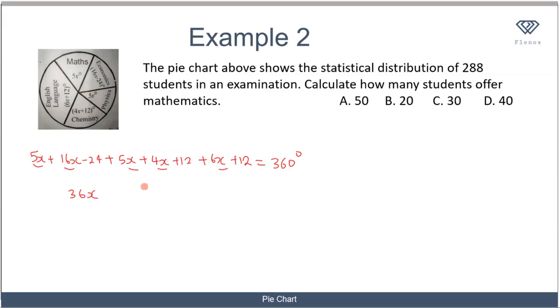Therefore, x equals 360 divided by 36, which equals 10. The degree of maths will be 5 times 10, which equals 50 degrees.